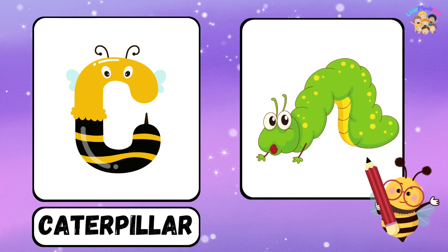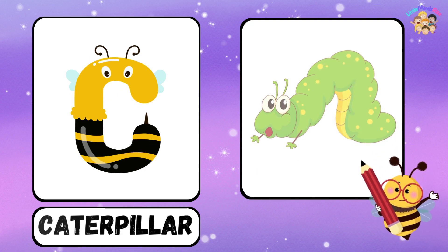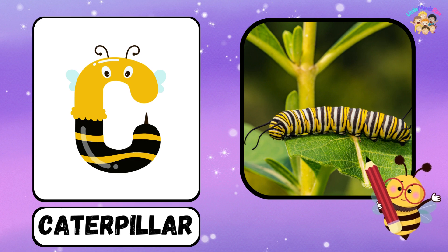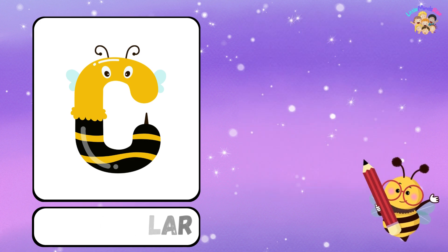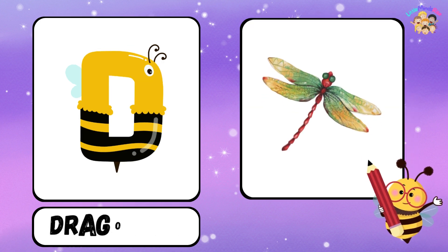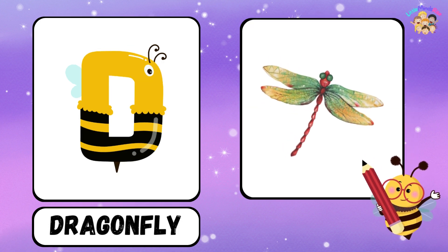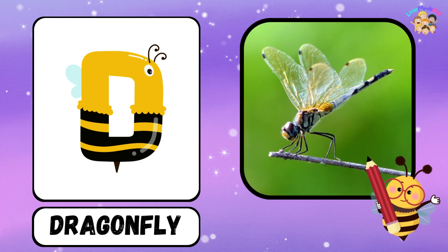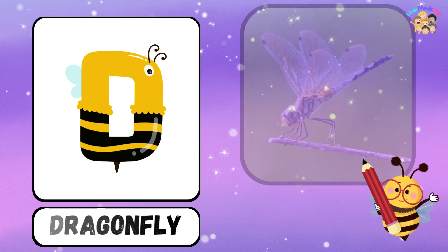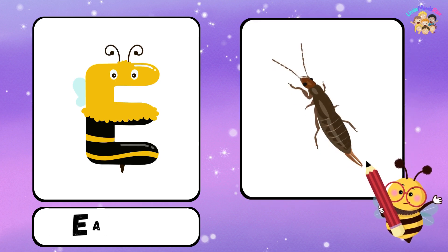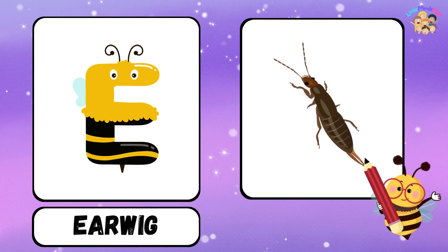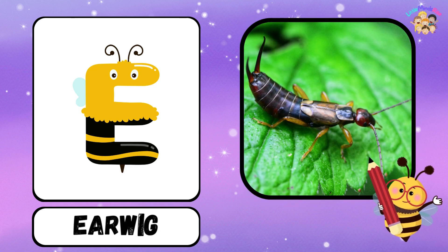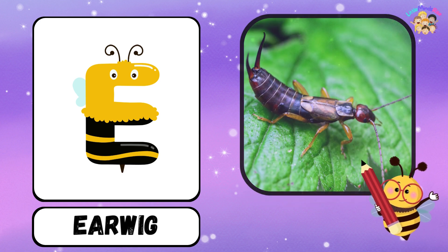C for Caterpillar. D for Dragonfly. E for Earwig.